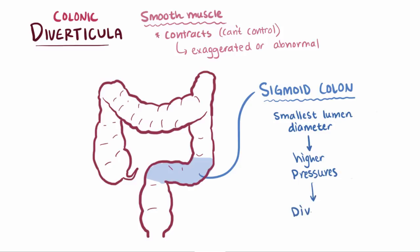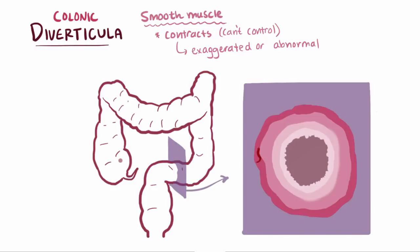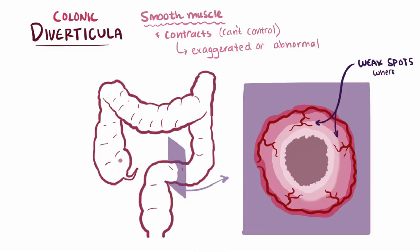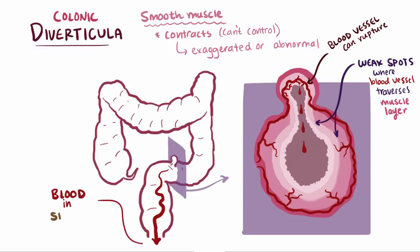The sigmoid colon is therefore where most diverticula form. Additionally, diverticula tend to form in the spots where the blood vessels that supply the intestinal walls traverse the muscle layer. This spot is slightly weaker, making it more likely for diverticula to form. As a diverticulum forms, that blood vessel responsible for wall weakness becomes separated from the intestinal lumen only by mucosa, and is therefore subject to injury and predisposed to rupture, meaning blood gets into the large intestine, which would then be passed into the stool.